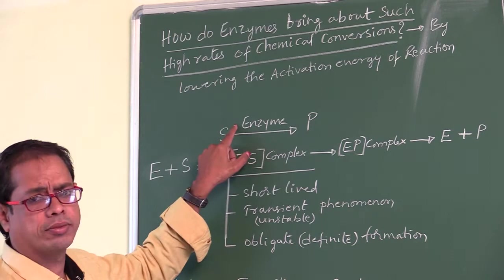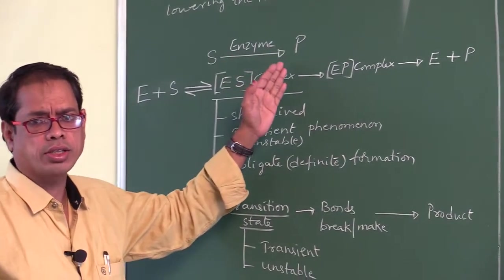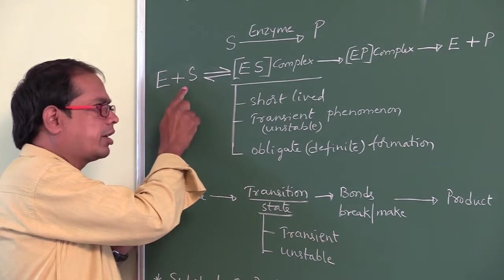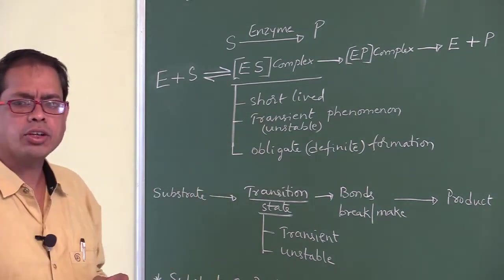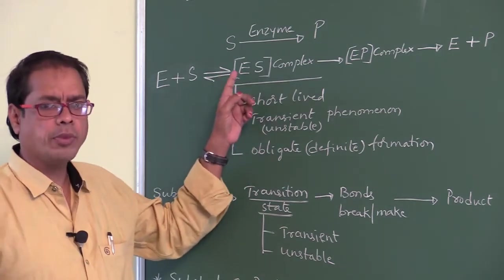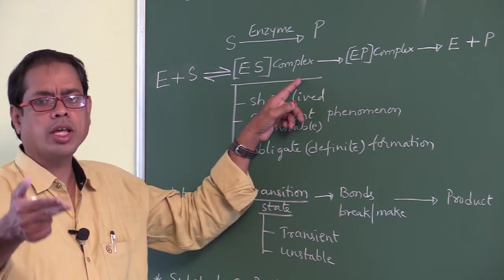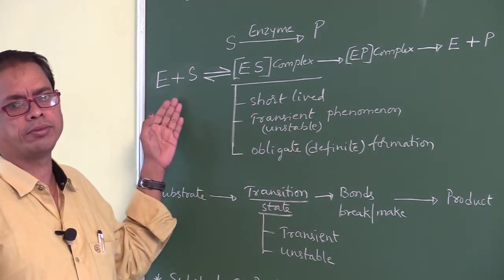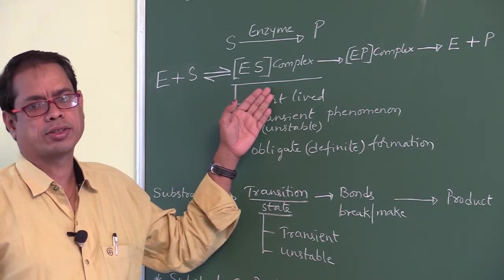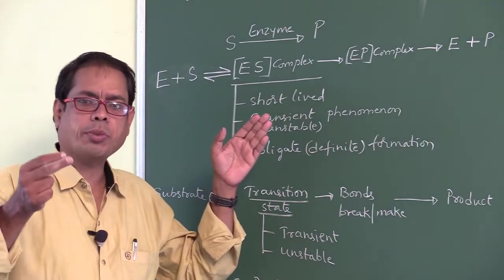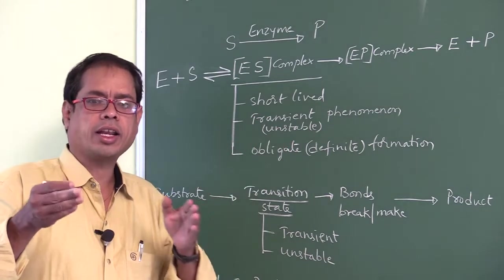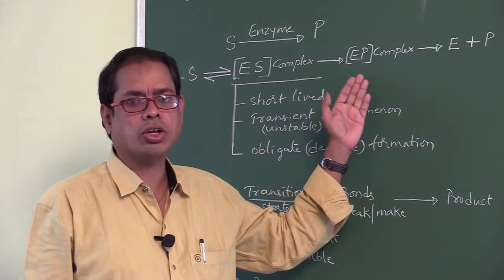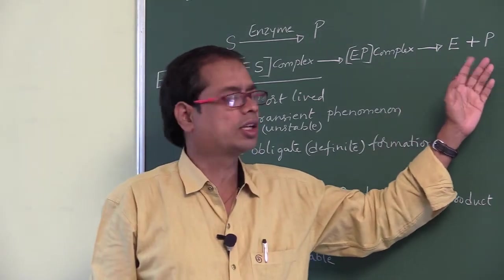Substrate S is converted into products with the help of an enzyme. When enzyme E plus substrate S combine, the substrate binds to the active site of the enzyme forming the enzyme-substrate complex. This complex then undergoes bond breaking in the substrate and new bonds are formed, producing the enzyme-product complex.